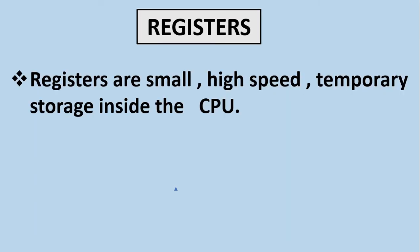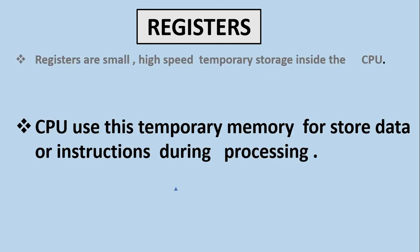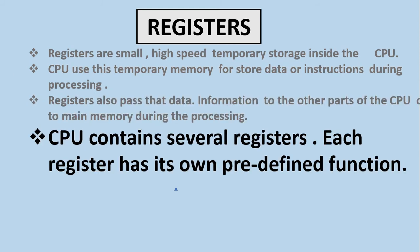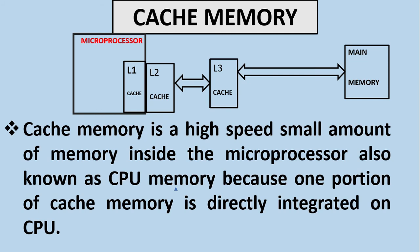Registers are small, high-speed, temporary storage locations inside the central processing unit. The CPU uses this temporary memory to store data or instructions during processing. Registers also pass data and information to other parts of the CPU or main memory during processing. Each register has its own predefined function. Commonly used CPU registers are: instruction register, accumulator register, data register, program counter register, and memory address register.